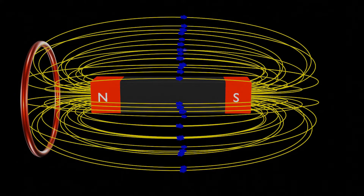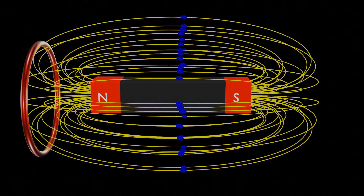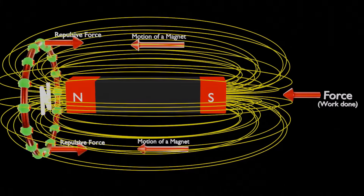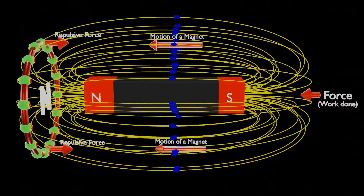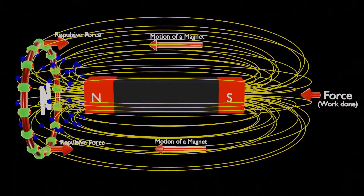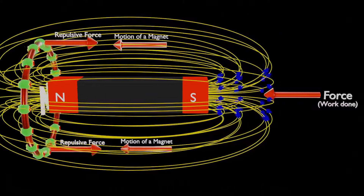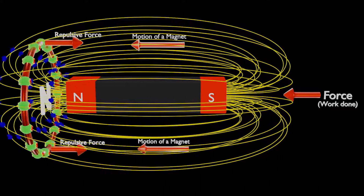If we want to flow a current of higher magnitude in the coil, we need to push the magnet with a force of higher magnitude. To oppose the additional force applied, the number of charges flowing through the coil increases, and thus a current of higher magnitude is produced.